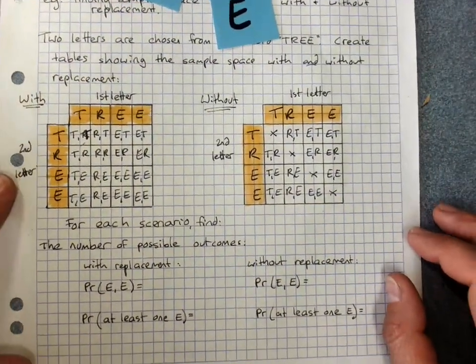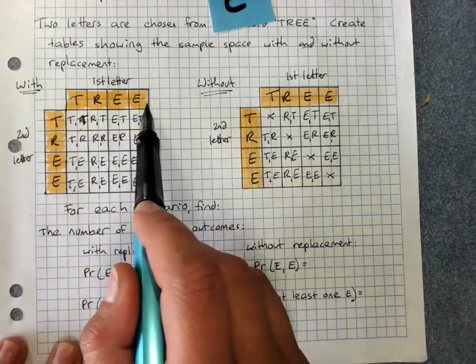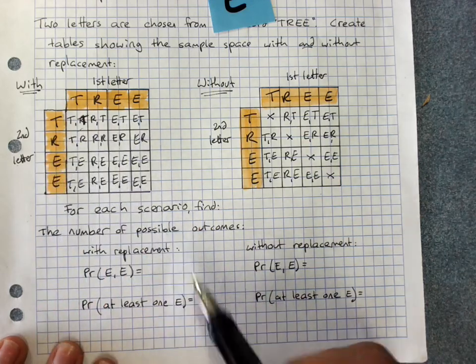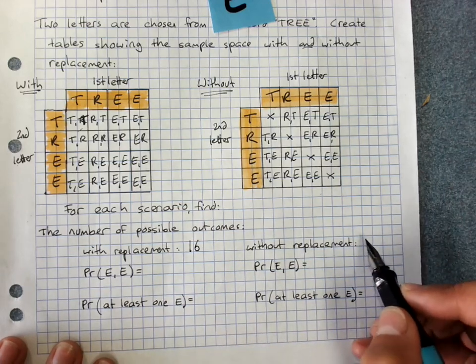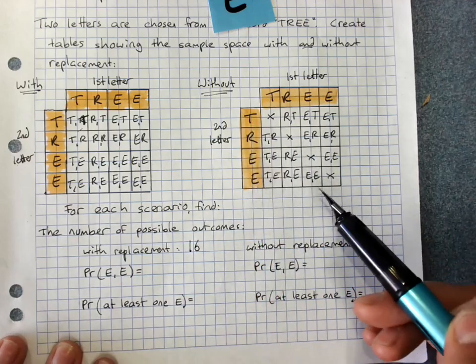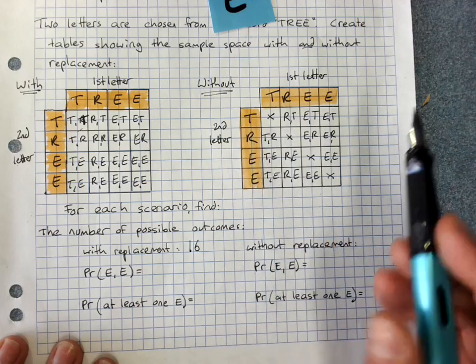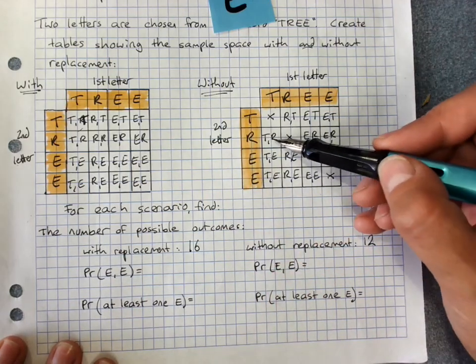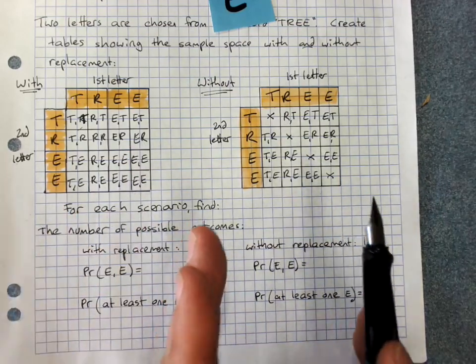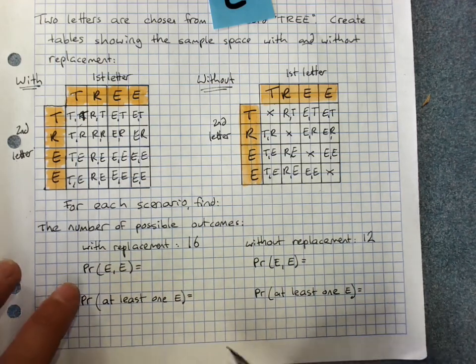For each scenario find the total number of possible outcomes. With replacement there were four outcomes possible for the first one, four outcomes possible for the second one. Four times four is sixteen, there's sixteen possible outcomes. Without replacement there's three possible on each row, or another way of thinking about it there's four letters available for the first letter but then there's only three letters available for the second. Four times three, that's twelve outcomes.